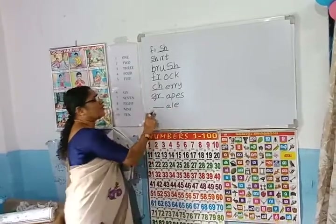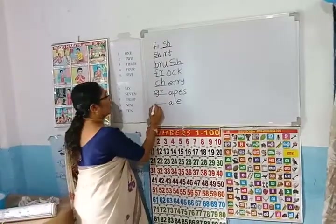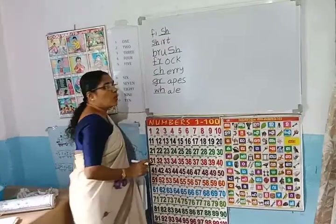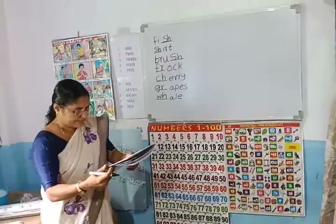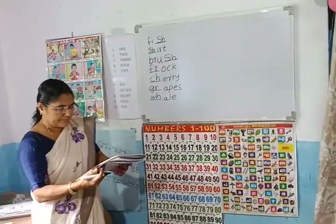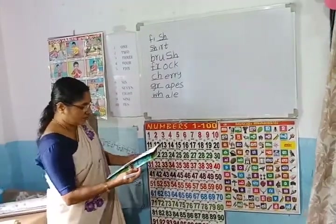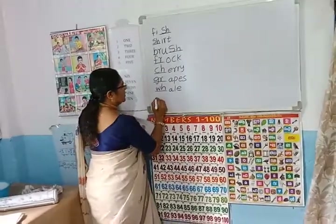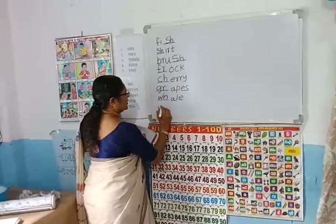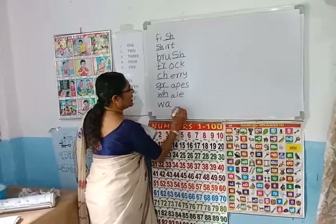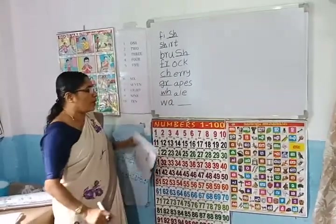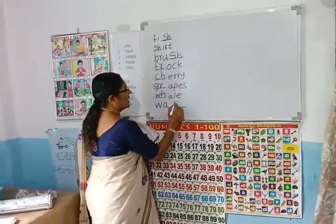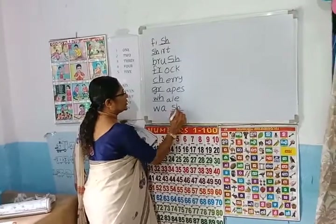Here, look. Which letter comes here? W, H. W, H — wave. W, A, dash — which blend letter? W, A, S, H — wash.